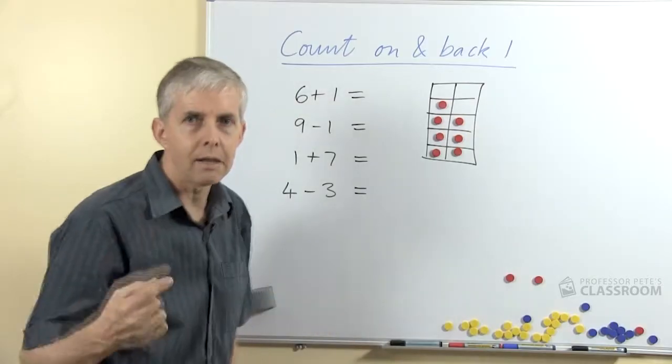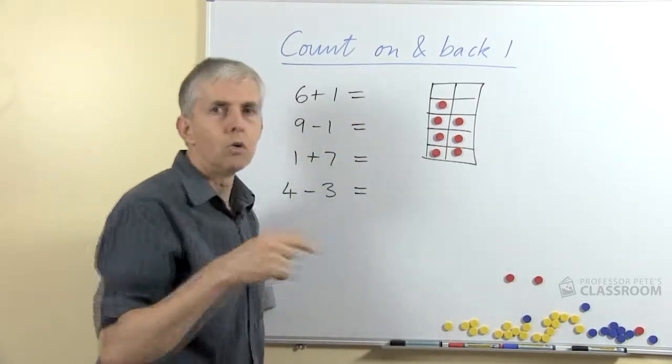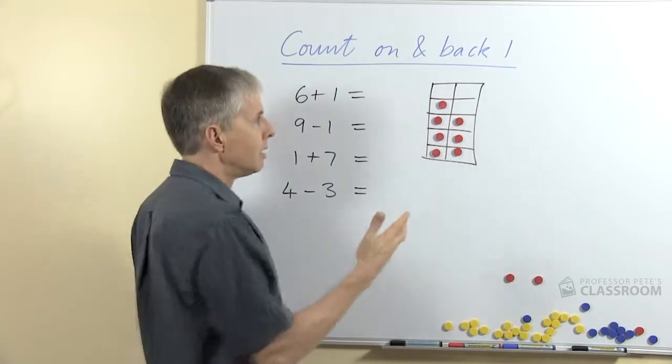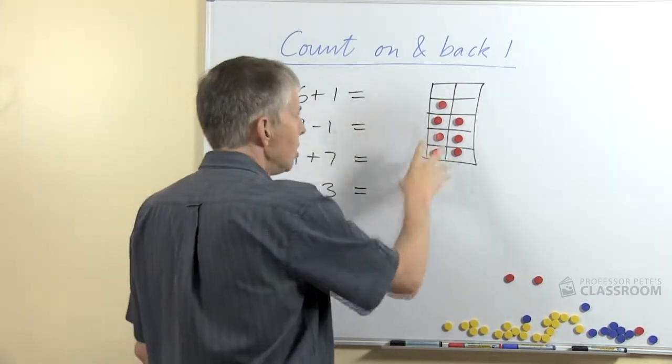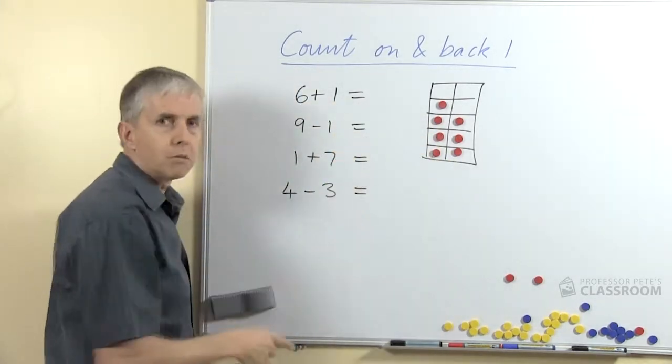They will quickly say that's 6. If I put one more what is it? Now they should be able to recognize it or subitize it without counting, so they could quickly see. All of these questions can be done that way.